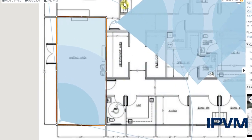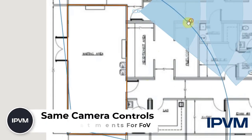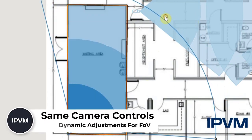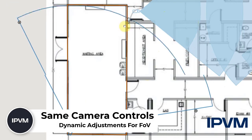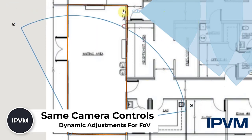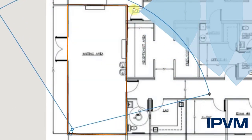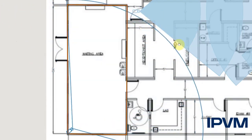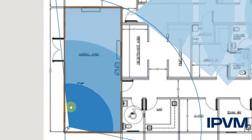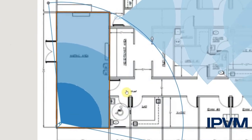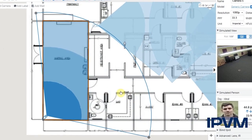We can see our camera controls — everything else is the same. If we click on that camera, it will adjust and change the field of view so that it will only give you the coverage within, in this case, the four walls that we drew.